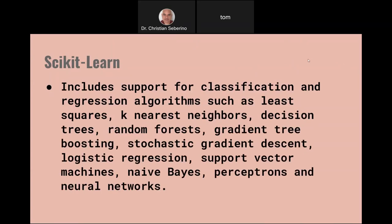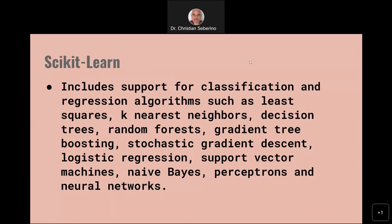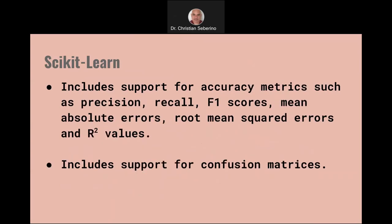Regarding algorithm support, Scikit-Learn includes support for classification and regression algorithms, including all the popular ones: least squares, k-nearest neighbors, decision trees, random forests, gradient tree boosting, stochastic gradient descent, logistic regression, support vector machines, naive Bayes, perceptrons, and neural networks. Once you build your model and want to evaluate it, it includes support for accuracy metrics such as precision, recall, F1 scores, mean absolute errors, root mean squared errors, and R-squared values. You can also use it to build and display confusion matrices.